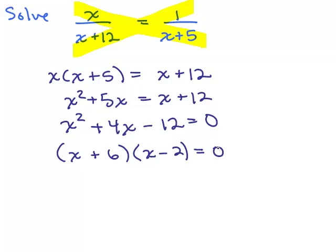All right, so we have to factor. You could do that on scratch paper. x plus 6 times x minus 2, and you set each factor equal to 0. So there's going to be two possible solutions here, if we did it correctly.